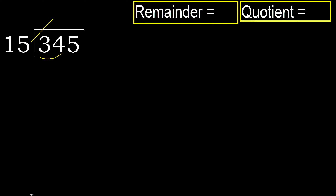15 multiplied by which number is nearest to 34 but not greater? 15 multiplied by 3 is greater. Multiplied by 2 is 30 — it is not greater. 34 minus 30 is 4.